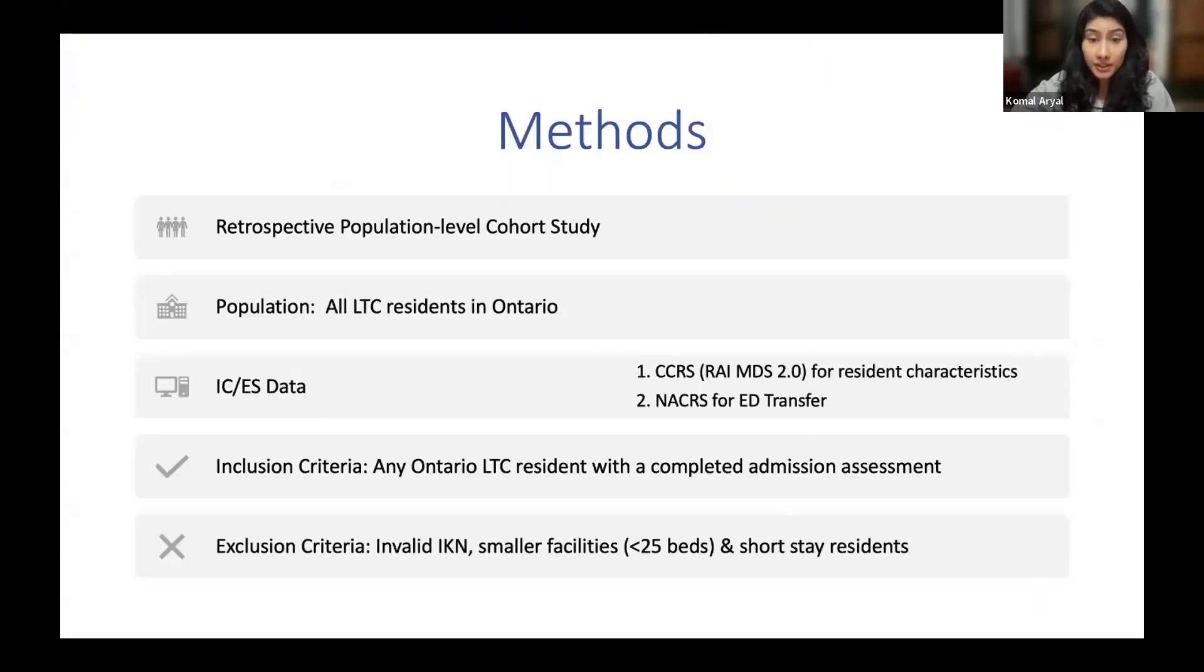Now I'll discuss the methods for our study. So to answer this question, we conducted a population-level retrospective cohort study on Ontario nursing home residents and their emergency department transfer data from January 1st 2017 to December 31st 2018 using the RAI dataset and the National Ambulatory Care Reporting System housed at ICES.